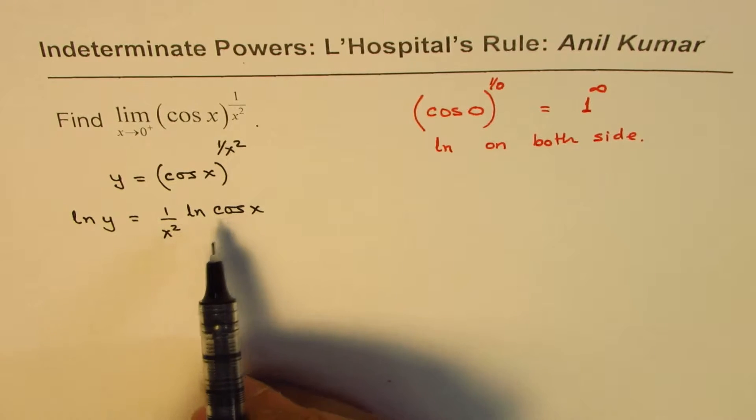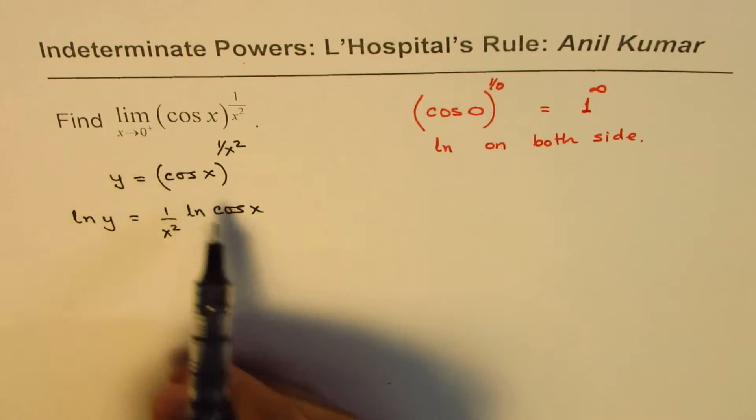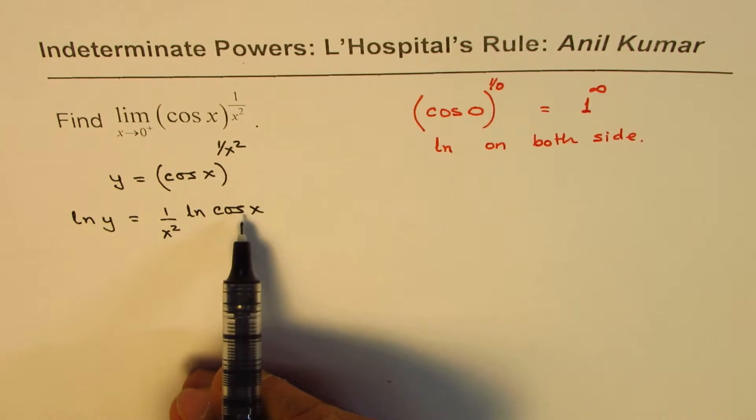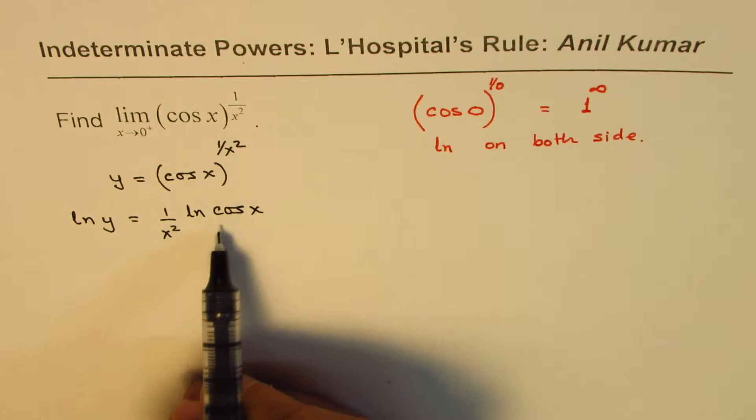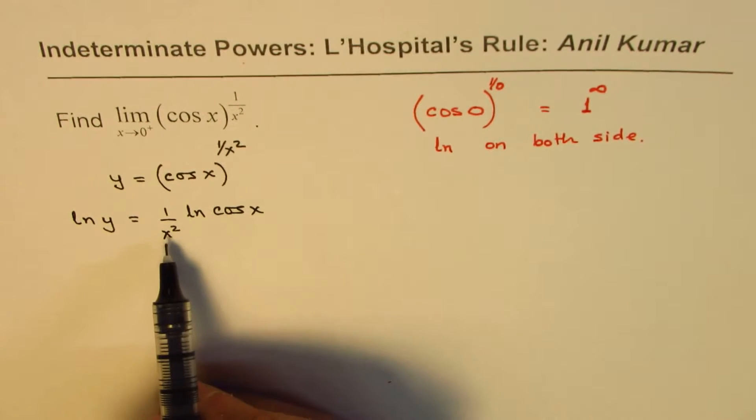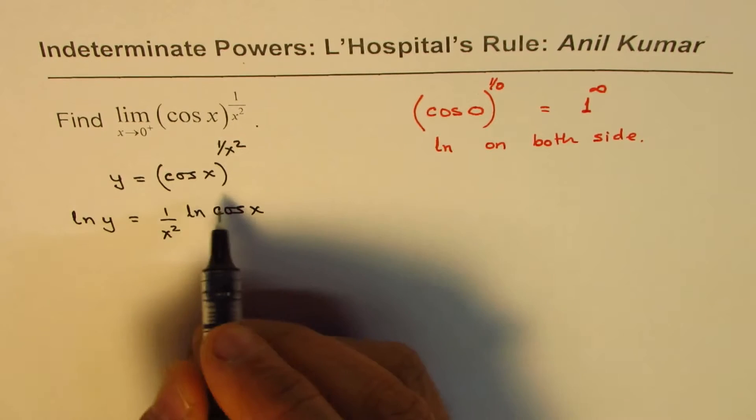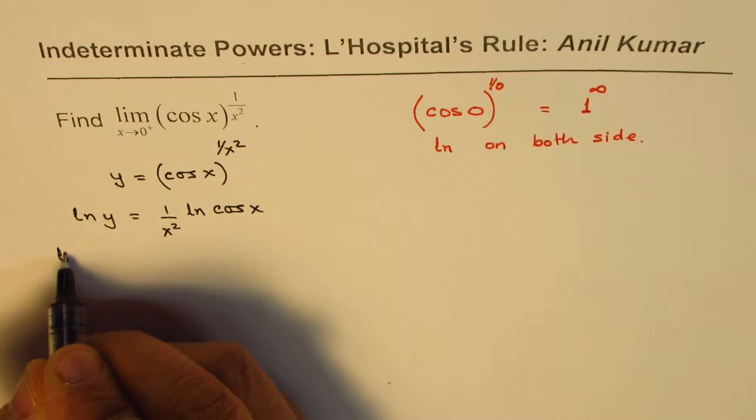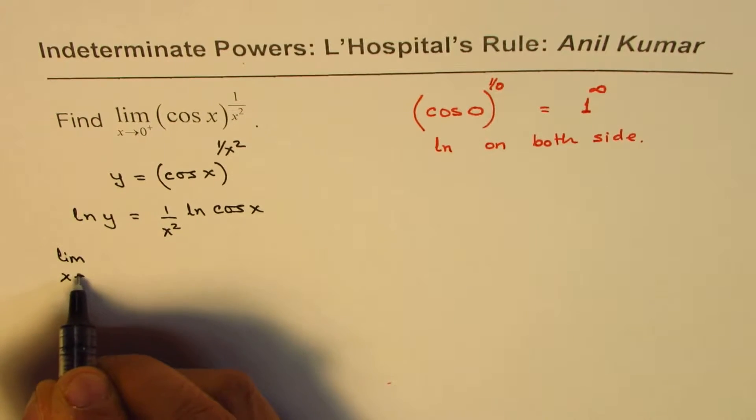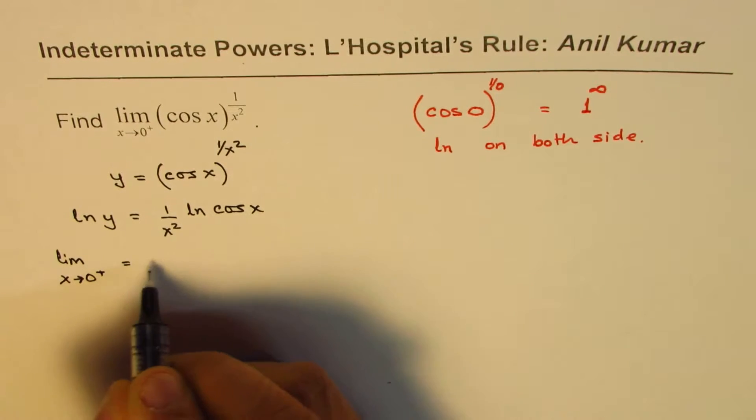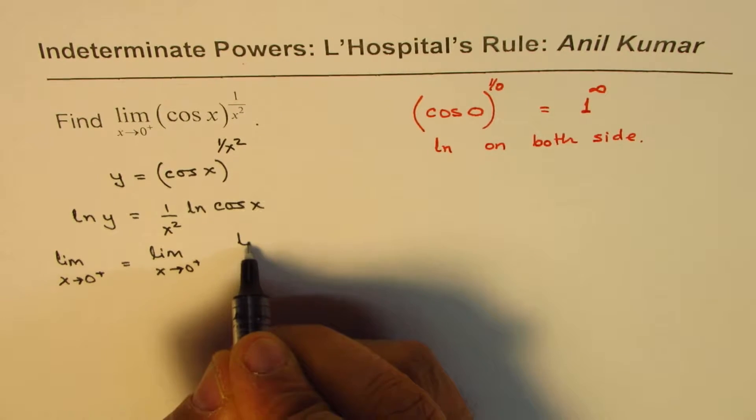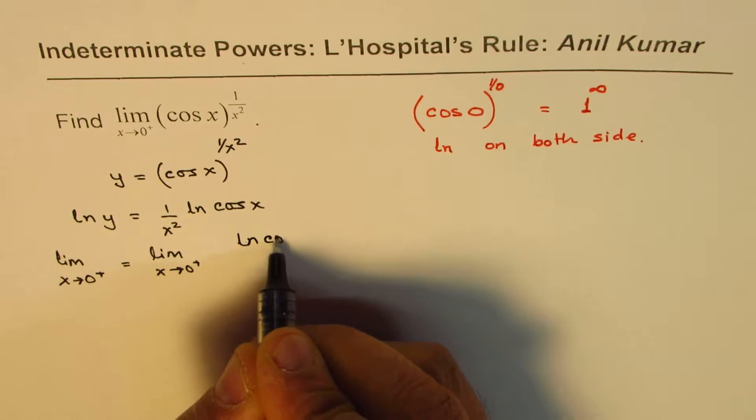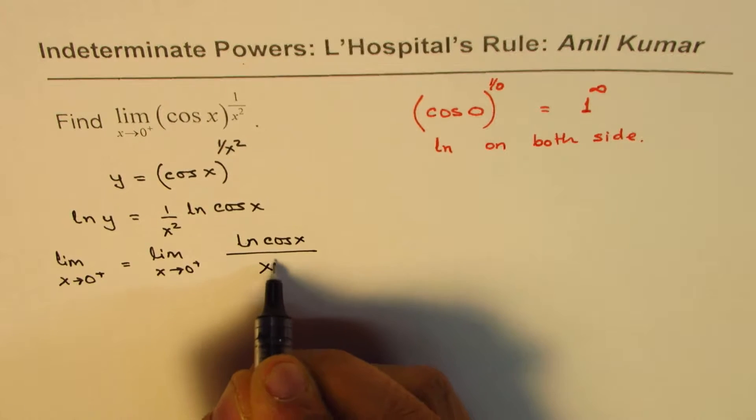Now if you see the right side, if I substitute 0, in that case ln 1 is 0 over 0 form. ln 1 is 0 and x is 0. So it's 0 over 0. So if I have to find the limit, we can say limit x approaches 0 plus. Limit x approaches 0 from the right side, we will write this as ln cos of x divided by x squared.